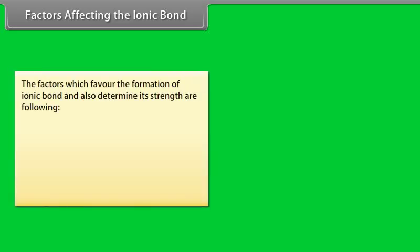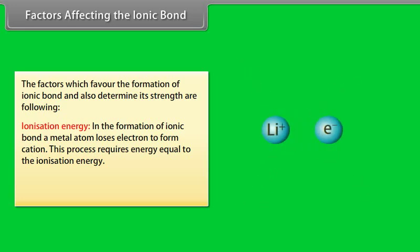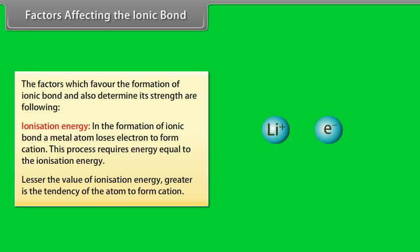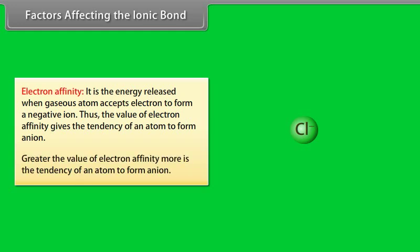Factors affecting the ionic bond: ionization energy — in the formation of ionic bond, a metal atom loses electrons to form a cation. This process requires energy equal to the ionization energy. Lesser the value of ionization energy, greater is the tendency of the atom to form a cation. Electron affinity — it is the energy released when a gaseous atom accepts an electron to form a negative ion. Greater the value of electron affinity, more is the tendency of an atom to form an ion.